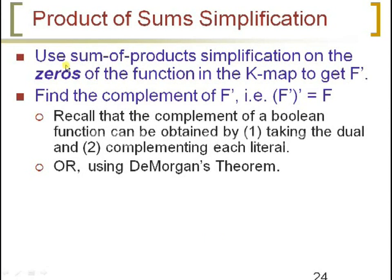For Product of Sum simplification, use the sum of products approach on the zeros of the function in the K-map to get F-complement. Up to now we have seen how to represent sum of products, but if you want to represent max sums, you have to represent them with zeros. The resultant expression is F-complement. To find F, take the complement of F-complement using duality and complementing each literal, or use De Morgan's theorem.